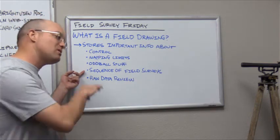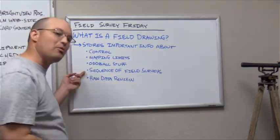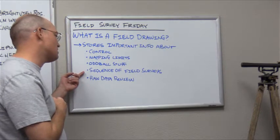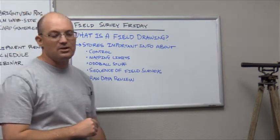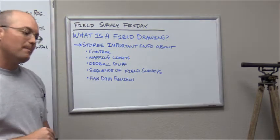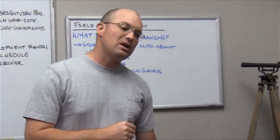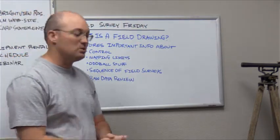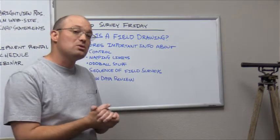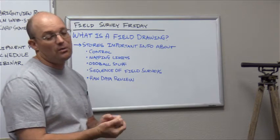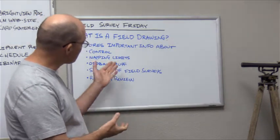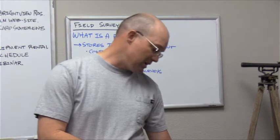The sequence of the field surveys. So we have a little table where we put in information about every field survey that was done on a job. And then you can use that to keep notes on how you're reviewing your raw data. That's really important, especially if you're doing raw data review by hand. But even at my company where we use Trimble Business Center to do raw data review, it helps to have some notes somewhere, a record of what was done and by who and when. So that's what a field drawing is.